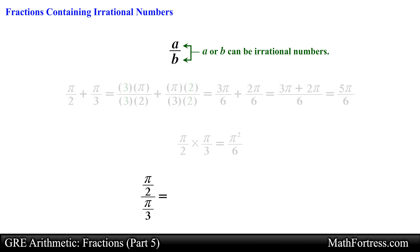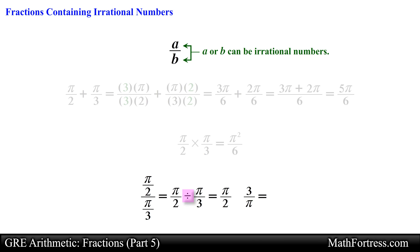Lastly we can also divide these types of numbers, as in the following complex fraction: pi/2 divided by pi/3. This is another way of denoting division, so we rewrite the complex fraction horizontally. Next we find the reciprocal of the second fraction and change the division operator to multiplication, then multiply across. Notice that the pi's cancel out, leaving the final answer equal to 3/2.